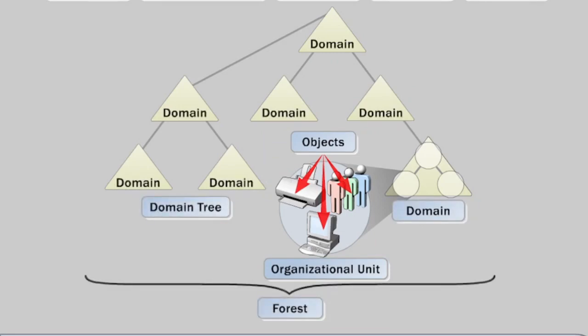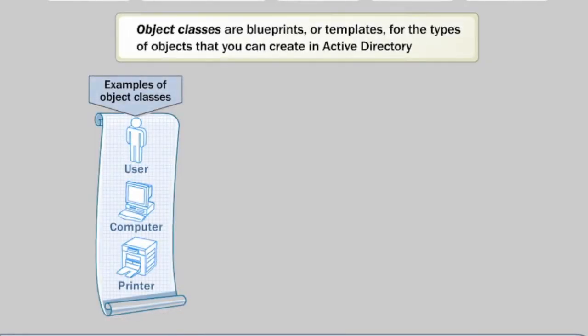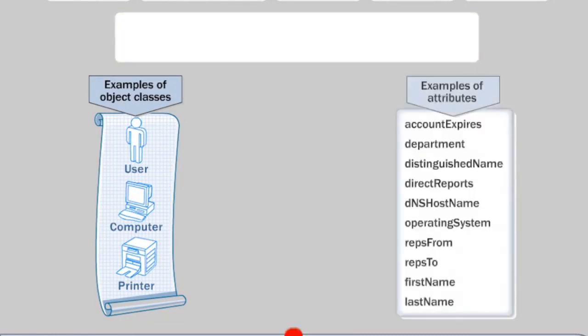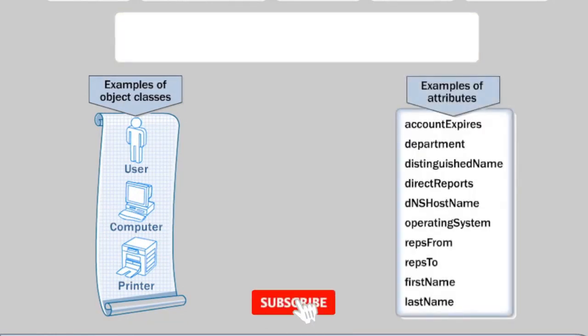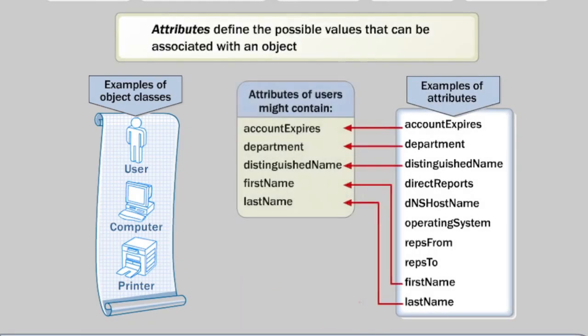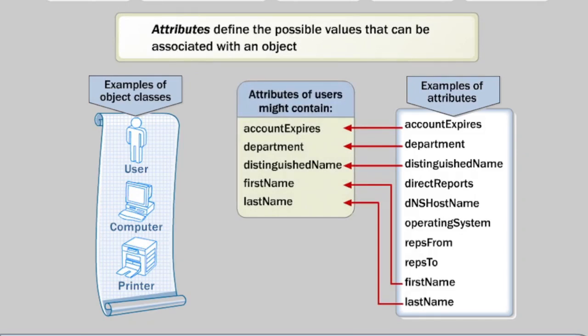Objects are the most basic components of the logical structure. They represent users and resources, such as computers and printers. Object classes are blueprints or templates for the types of objects that you can create in Active Directory. Each object in Active Directory is uniquely defined by the combination of its attribute values. Attributes define the possible values that you can associate with an object.